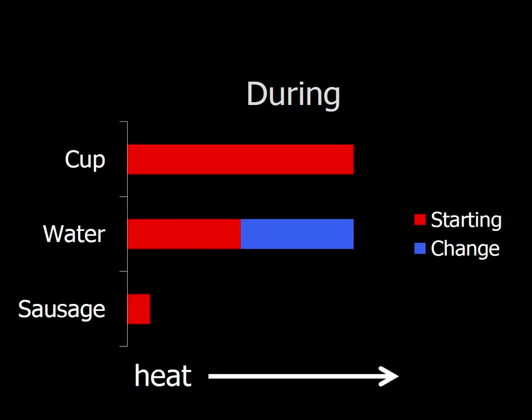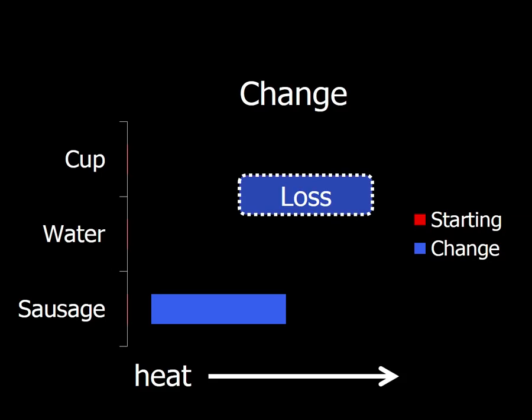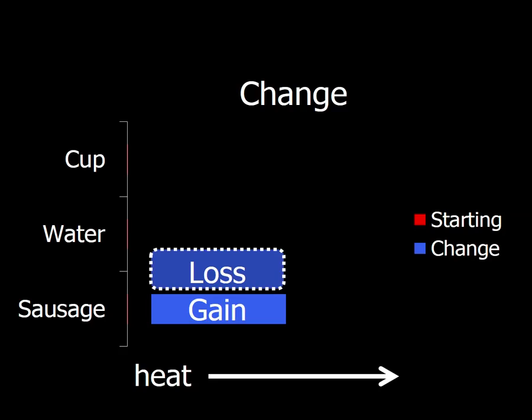And the heat gets transferred. So the water loses some heat and the cup loses some heat. We're going to make the assumption that the heat that's lost by the cup and the water equals the heat that's gained by the sausage. So this is going to be a part in your calculations where you're going to take the heat and switch the sign.